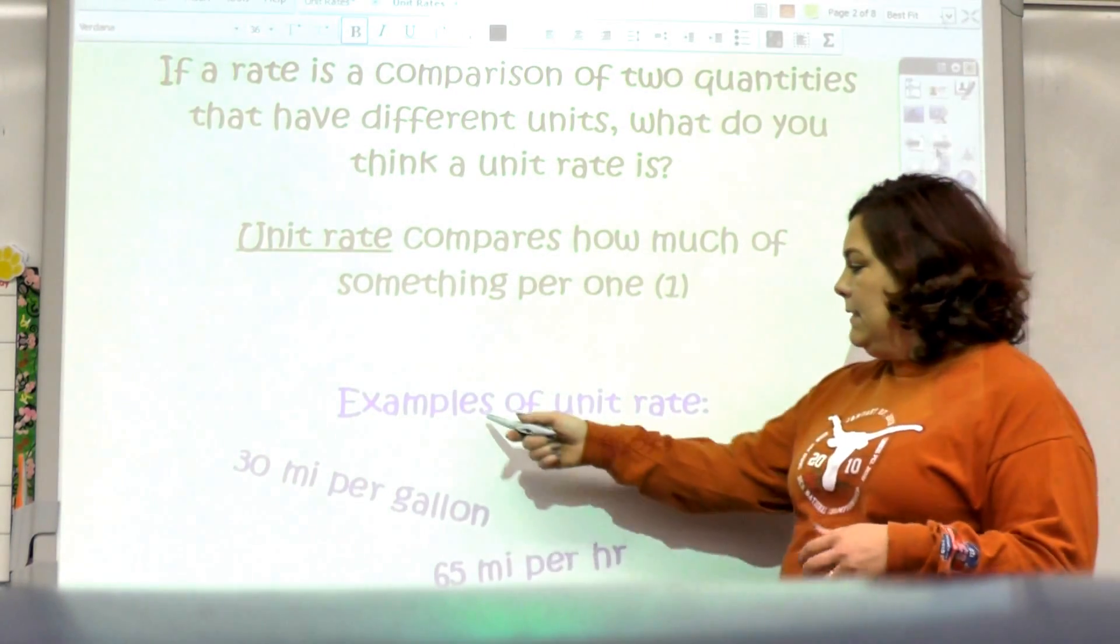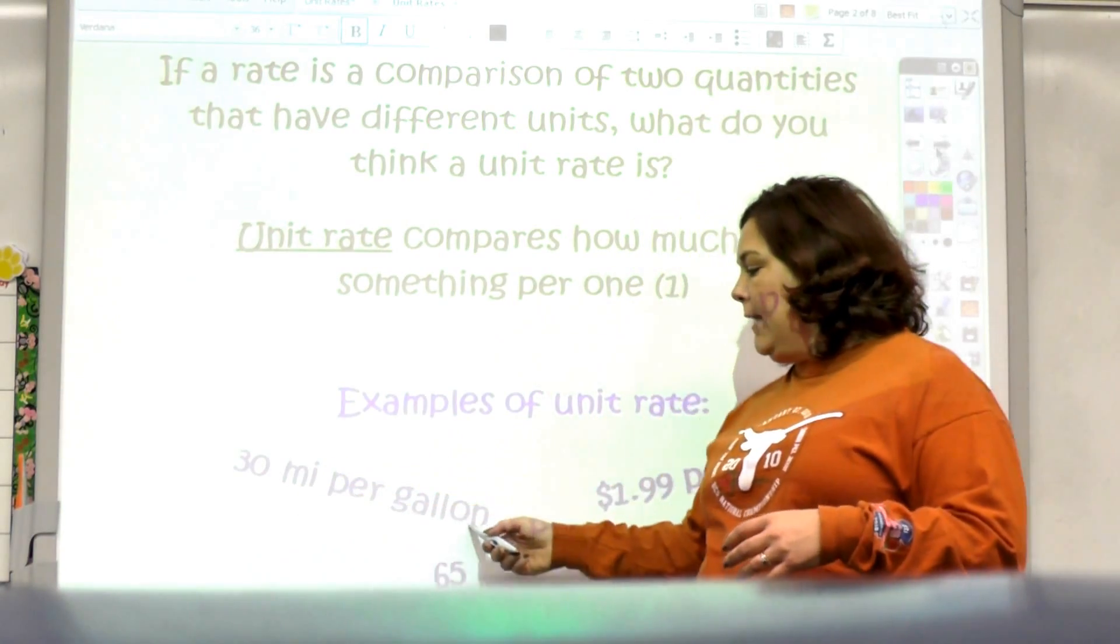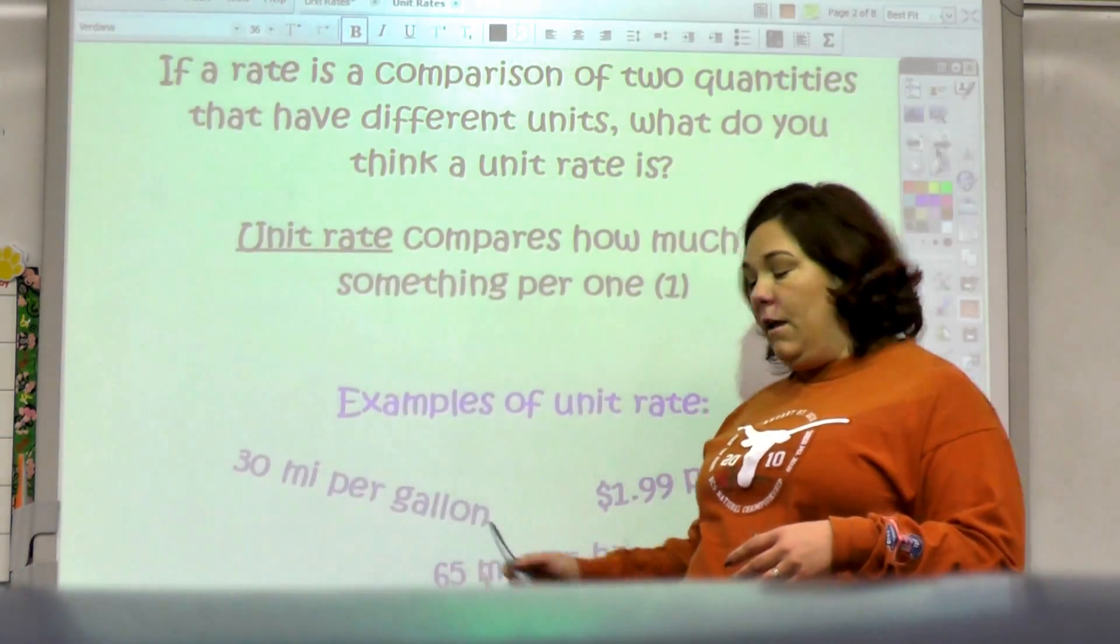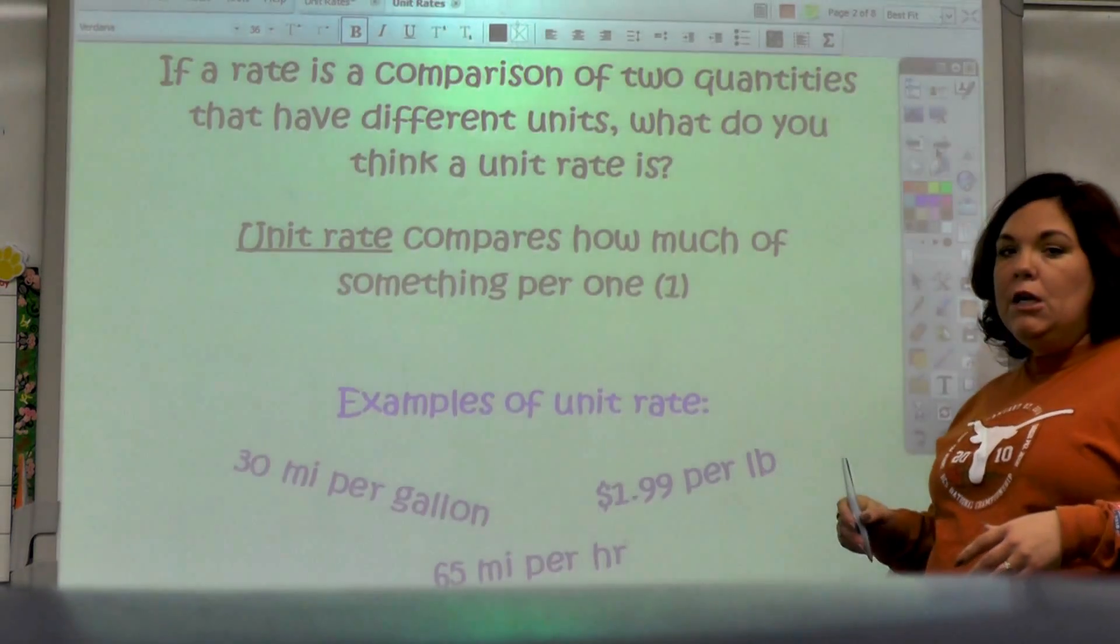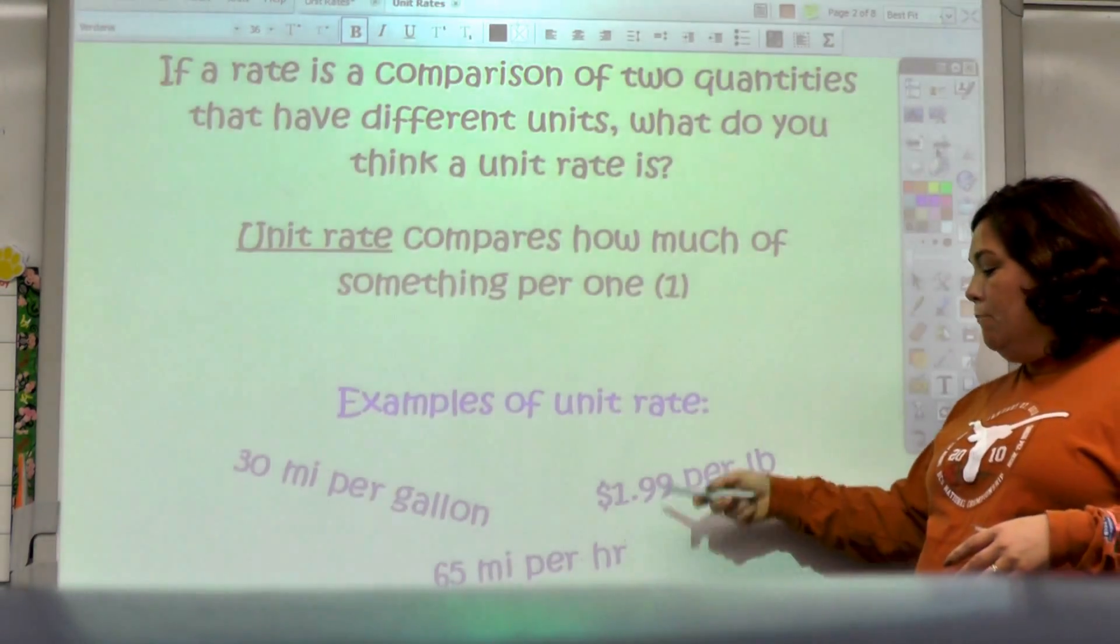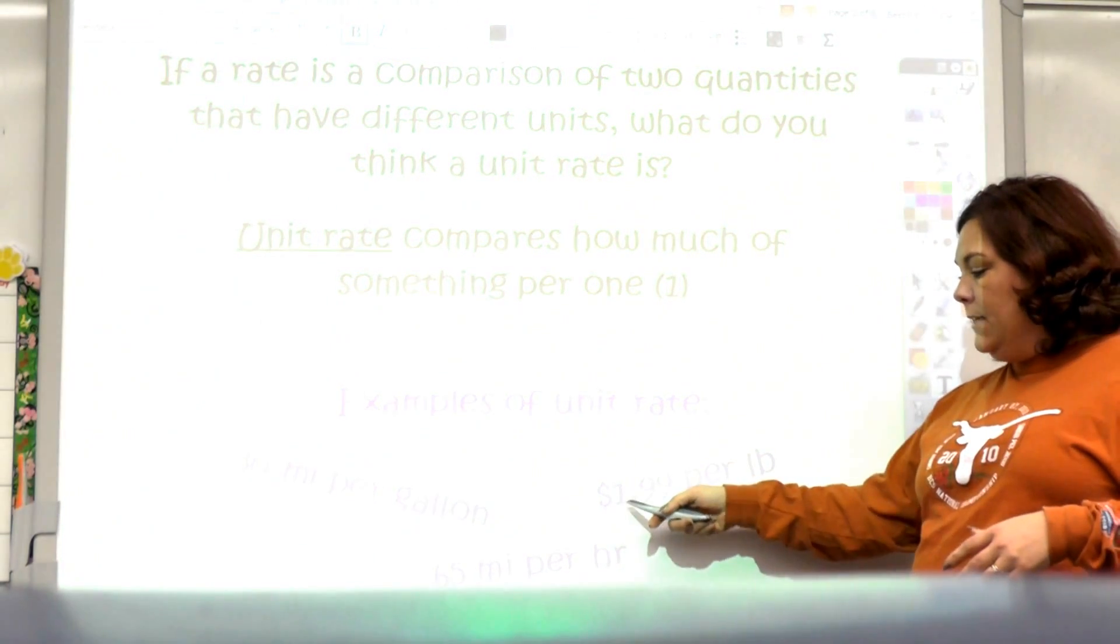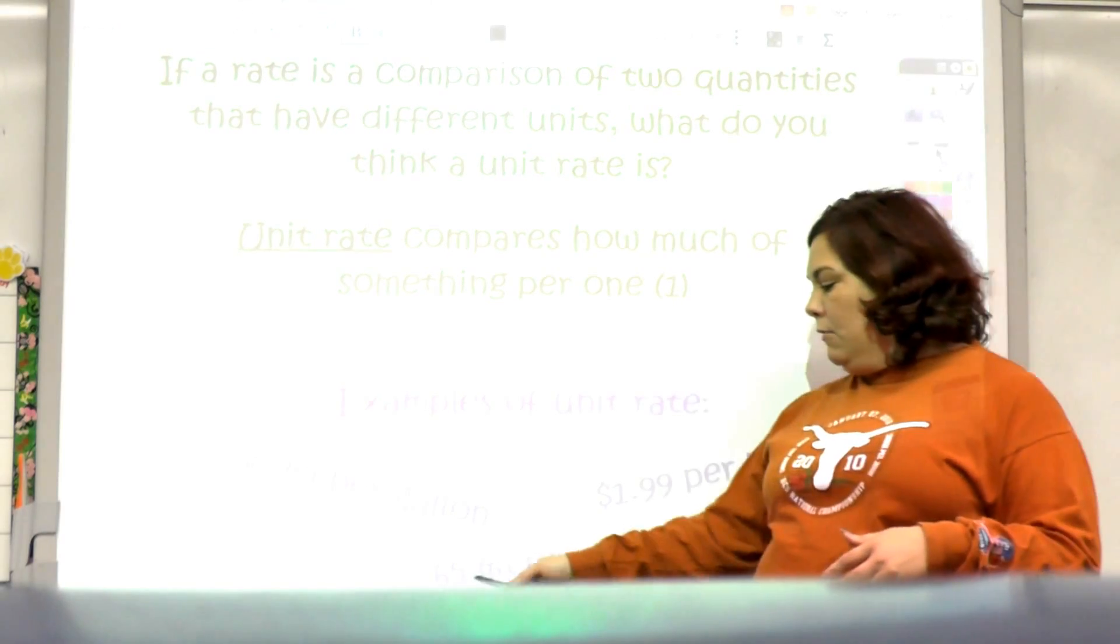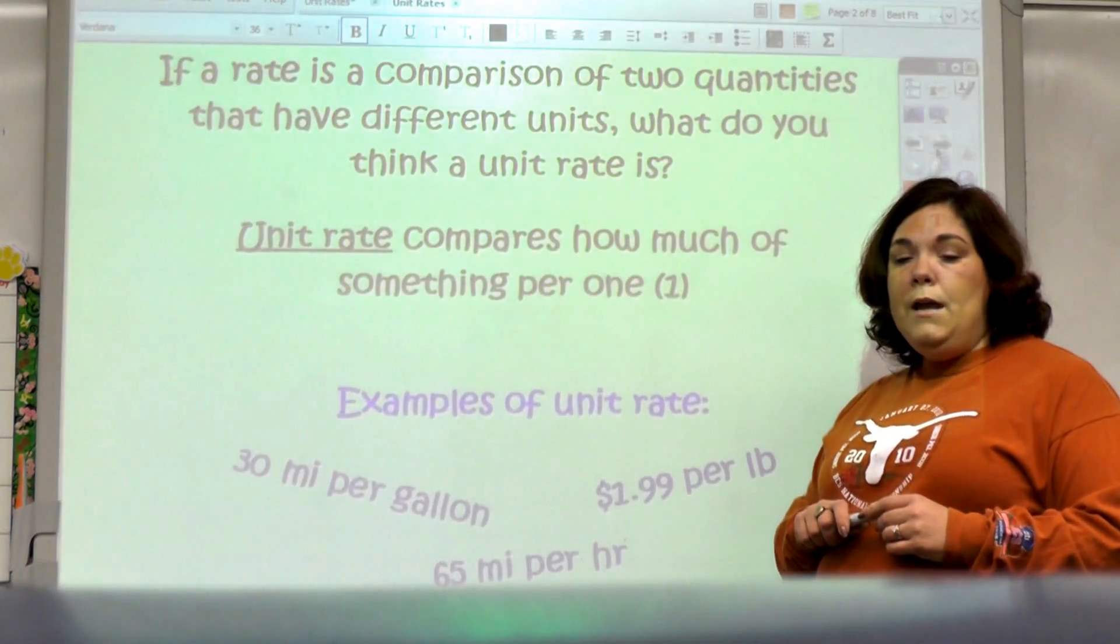Some examples of unit rates are 30 miles per gallon, so you can go 30 miles on one gallon, and $1.99 per pound, so it might be more for three pounds but you know it's $1.99 per pound.